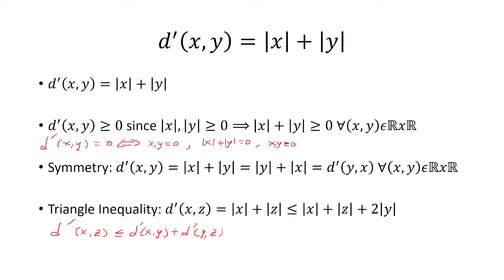So we consider first d' of x comma z, which by definition is the absolute value of x plus absolute value of z. And here we know that this is going to be less than or equal to the absolute value of x plus absolute value of z, plus now 2 times the absolute value of y. And this is going to be greater than or equal to 0, which makes this inequality hold.